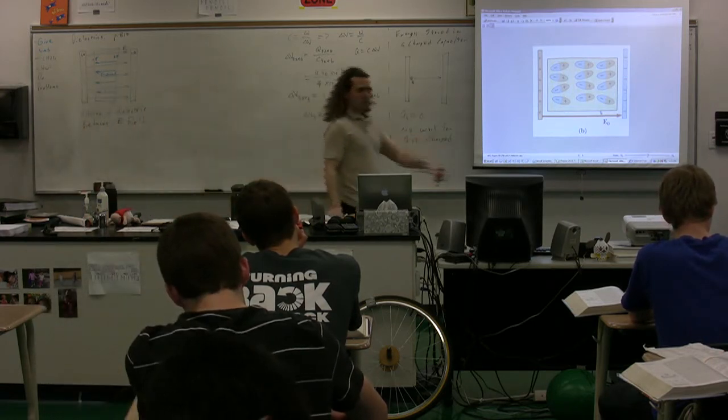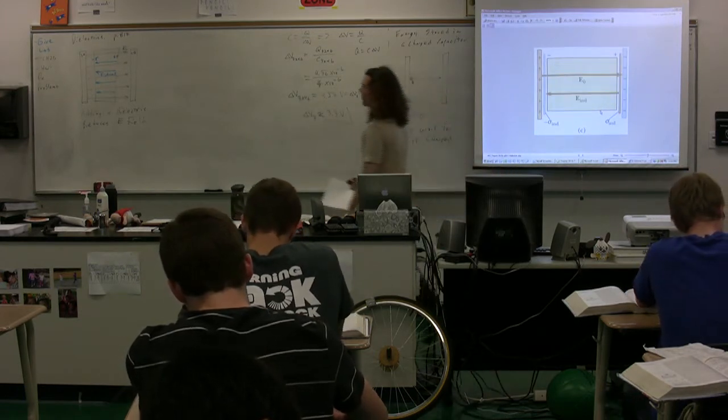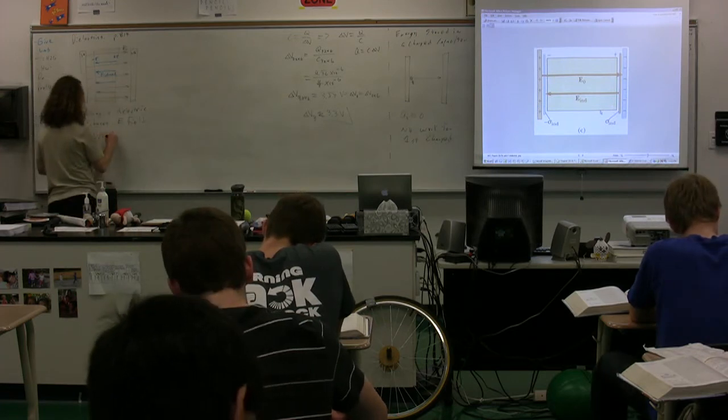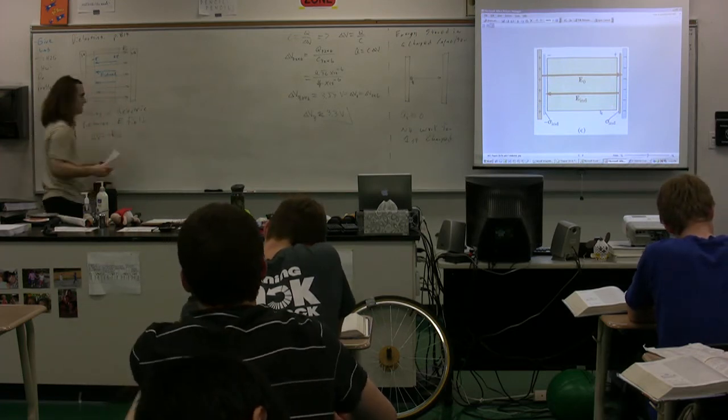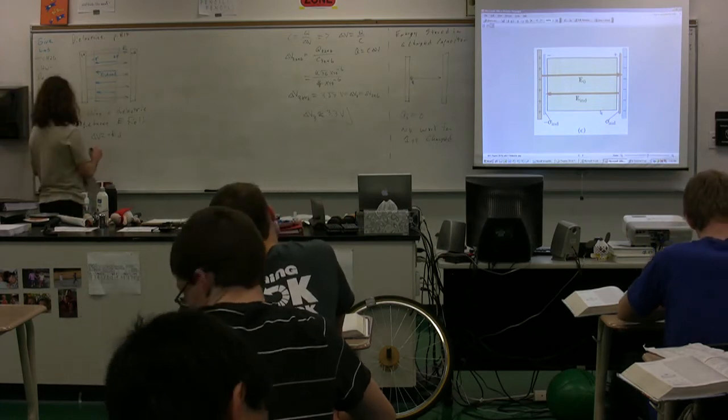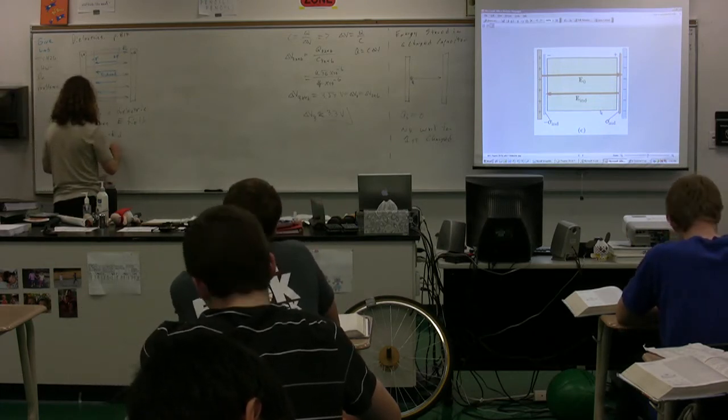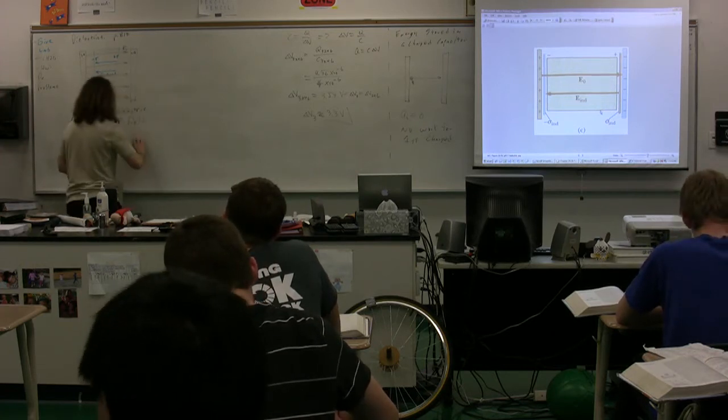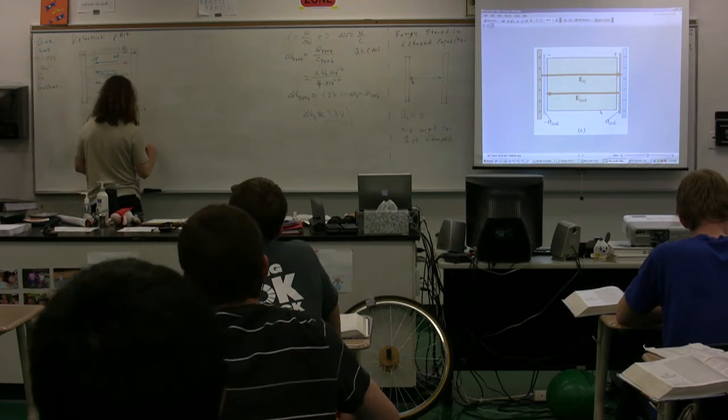We know, for a parallel plate capacitor, the electric potential difference is equal to negative E times D, the distance between the two. So, if it reduces the electric field, it also reduces the electric potential difference.